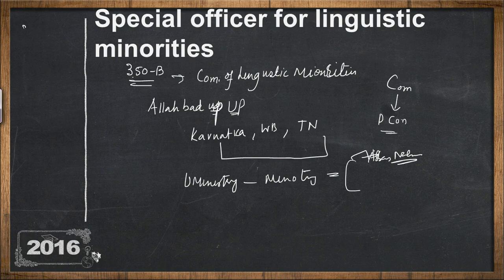Under Article 350B, the officer is designated as Commissioner of Linguistic Minorities. The main office is in Allahabad. Grievances that arise relate to the non-implementation of the constitutional provisions meant for linguistic minorities.